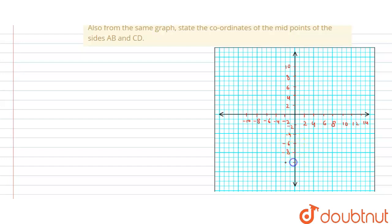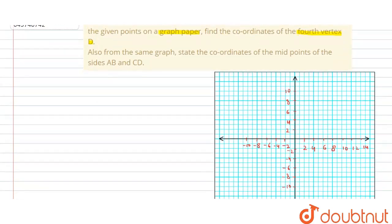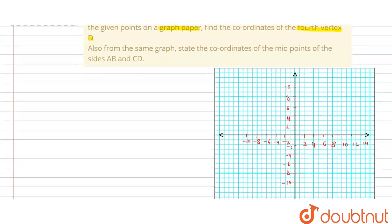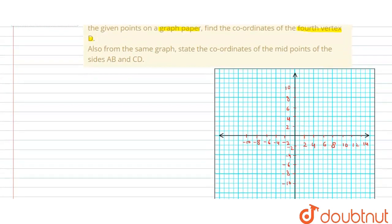Now we plot the points. The first point is (-2, 2), so X is negative and Y is positive. X is minus two and Y is plus two — this is point A with coordinates (-2, 2).